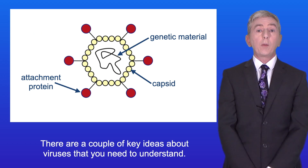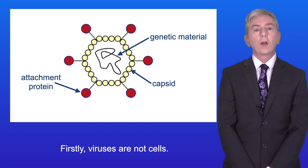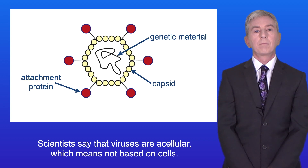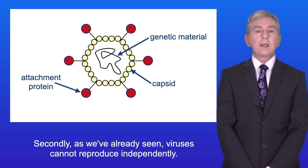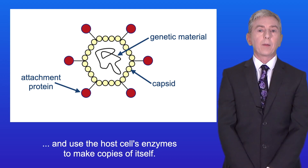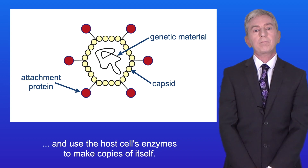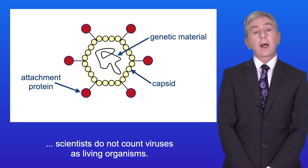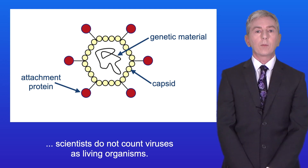There are a couple of key ideas about viruses that you need to understand. Firstly, viruses are not cells. Scientists say that viruses are acellular, which means not based on cells. Secondly, as we've already seen, viruses cannot reproduce independently. In order to reproduce, a virus must invade a host cell and use the host cell's enzymes to make copies of itself. So because viruses cannot reproduce on their own, scientists do not count viruses as living organisms.